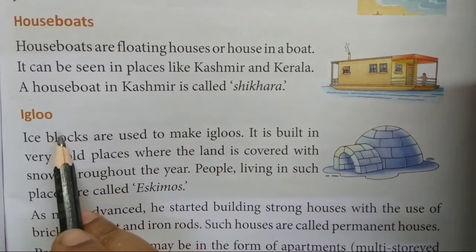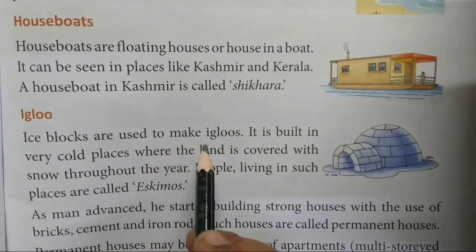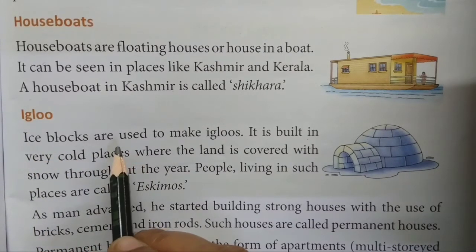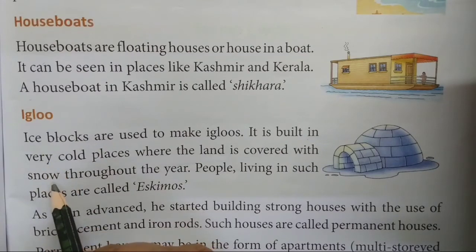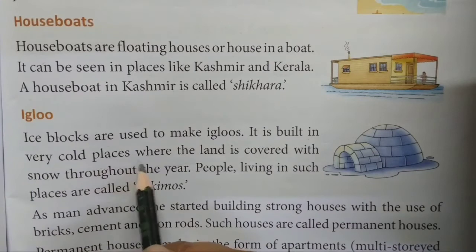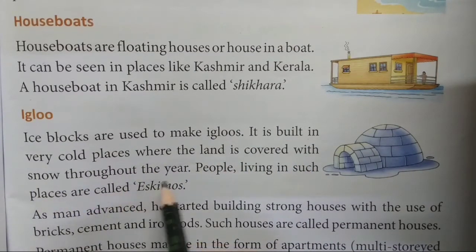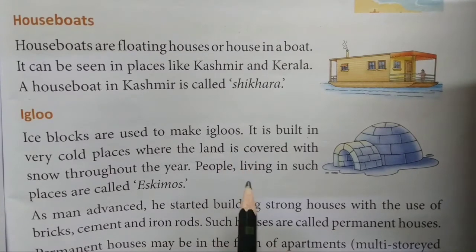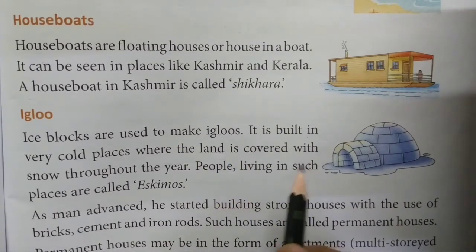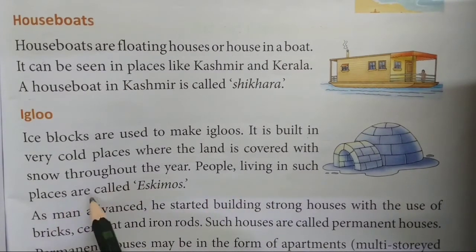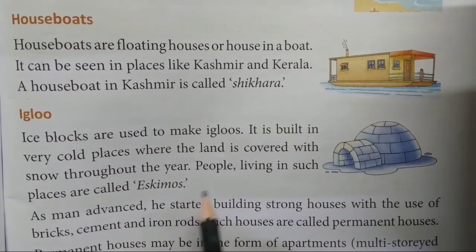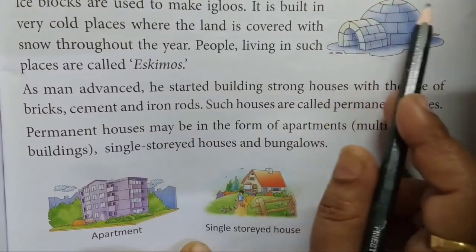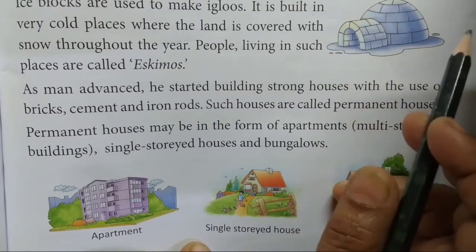Next is igloo. Ice blocks are used to make igloos — igloos बनाने के लिए ice blocks यूज़ किये जाते हैं। It is built in very cold places where the land is covered with snow throughout the year — यह बहुत ही ठंडे जगहों में बनाई जाती है जहाँ पूरे साल जमीन बर्फ से ढकी होती है। People living in such places are called Eskimos — जो लोग ऐसे जगहों में रहते हैं उन्हें Eskimos कहा जाता है।